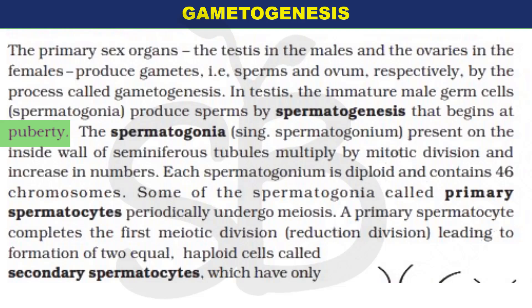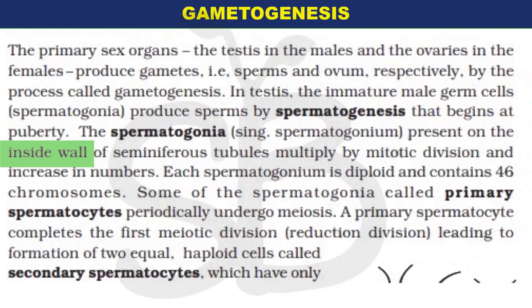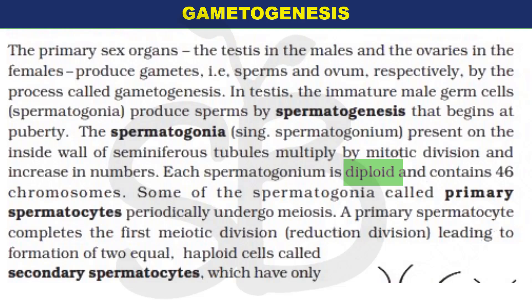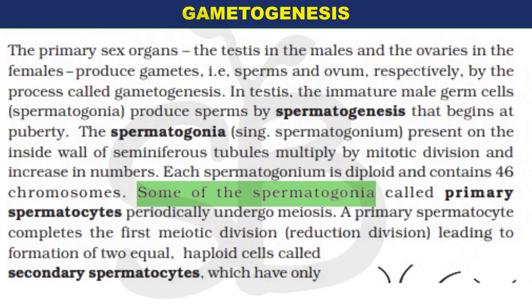How does spermatogenesis work? Spermatogonia are present in the walls of the seminiferous tubules. These cells undergo mitotic division, increasing in number. This mitotic division produces primary spermatocytes, which are in a diploid condition with 46 chromosomes. This is called the primary spermatocyte stage.